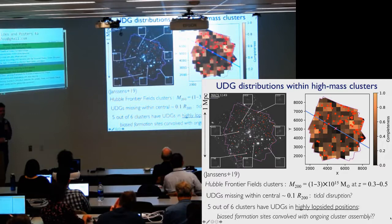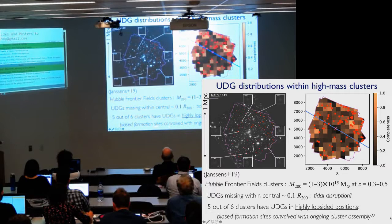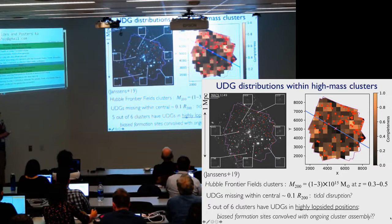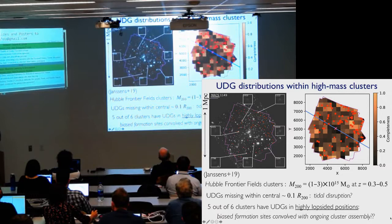And out of the six frontier field clusters, five of them have a highly significant lopsidedness. So that's hot off the press. You should see this soon on the archive. But we don't know what to make of this. We're not really sure except that it may be some association with cluster assembly. These are all actively assembling clusters, and is it possible that some of the clusters have higher UDG fractions than others, some kind of biasing in the formation sites in the early universe? So if anybody has ideas on this, please let me know. We have no idea what's going on here.